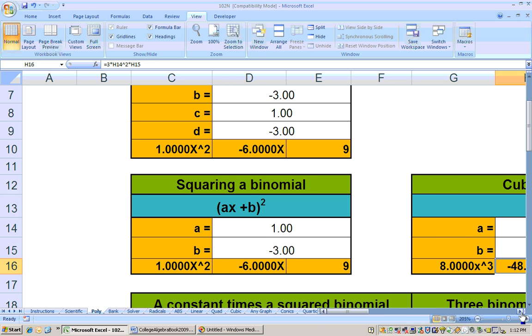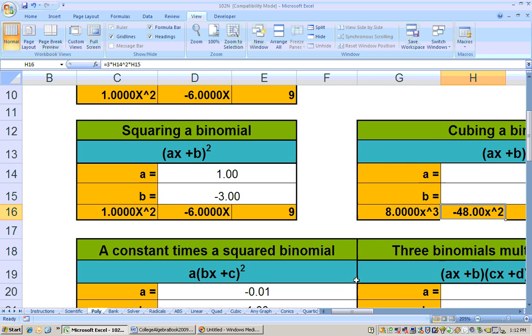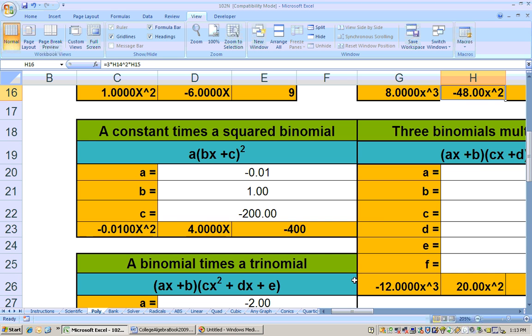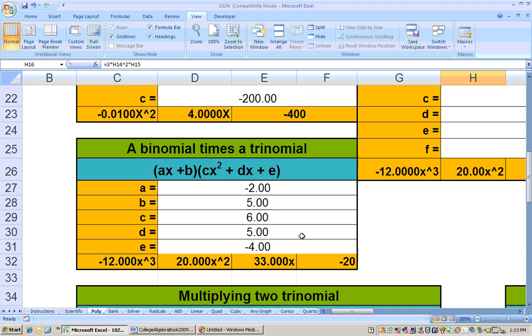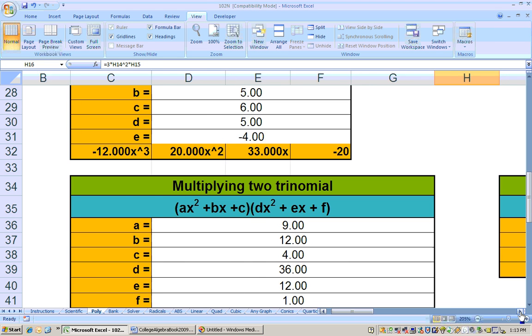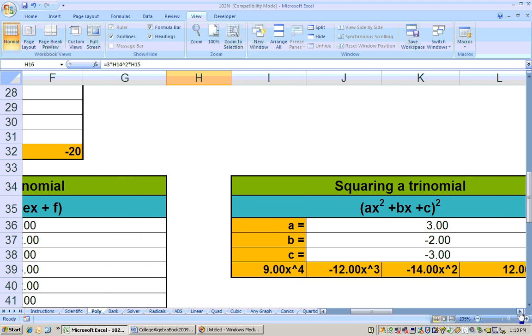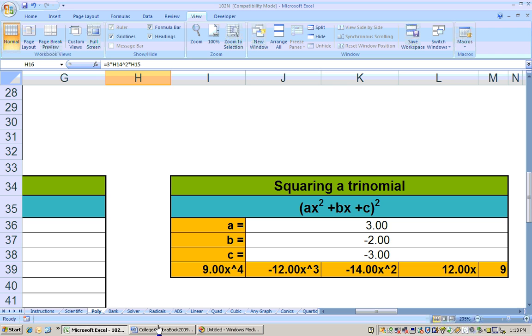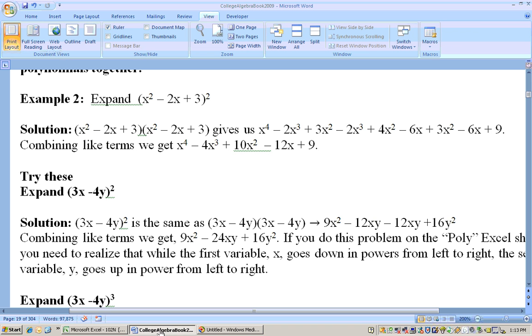But now, the problem that we just saw was a trinomial because there was three terms, and it was a trinomial squared. Now, if you go down here, it has some extra things like constant times a binomial, three binomials, let's multiply together, a binomial times a trinomial. Here's multiplying two trinomials together, two different trinomials, or they could be the same. But if you have the same, you might as well just use this area right here, squaring a trinomial. So let's take a look at our coefficients here on this problem, and my coefficients are 1, minus 2, and 3. And that's the trinomial that we need to square, 1, minus 2, and 3.